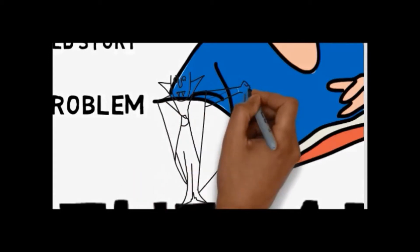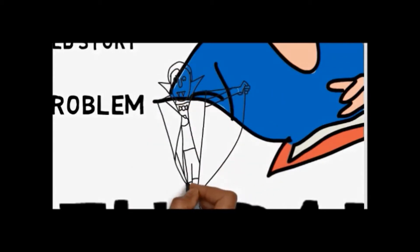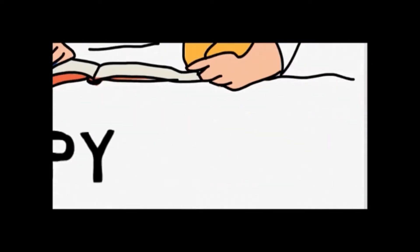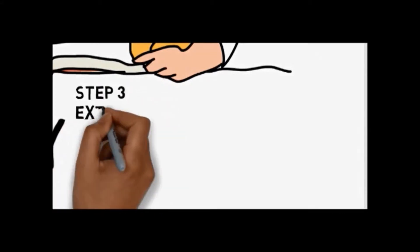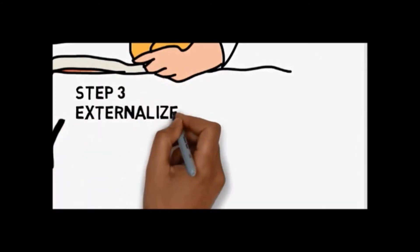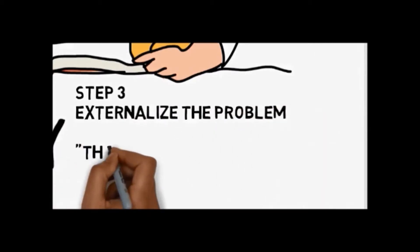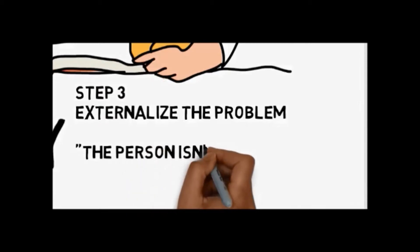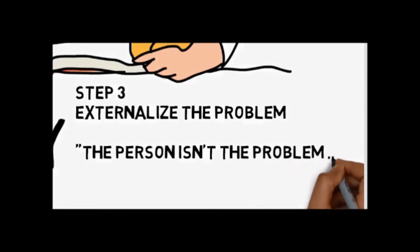And then comes the third step, the externalization of the problem. The pastoral counselor will help the client to see that the problem is not an essential part of them. It is something that can exist without, and that they can exist without. In so doing, there is a recognition that the person is not the problem. That the problem is the problem. And that clarity becomes important.